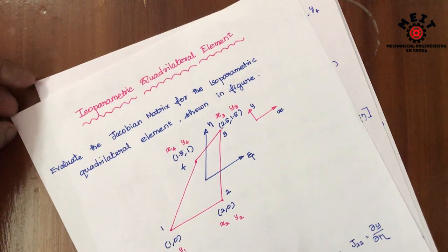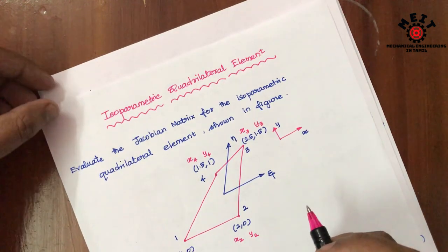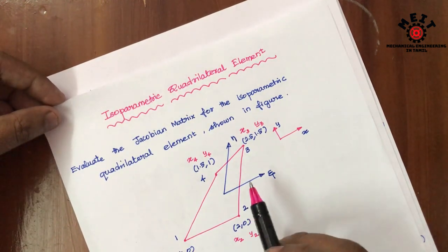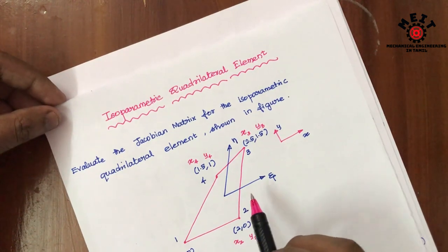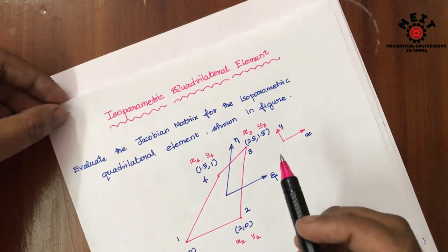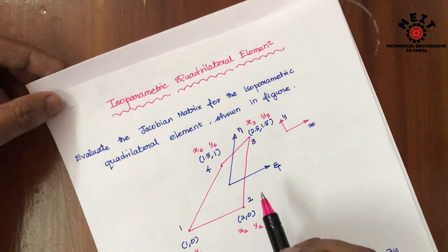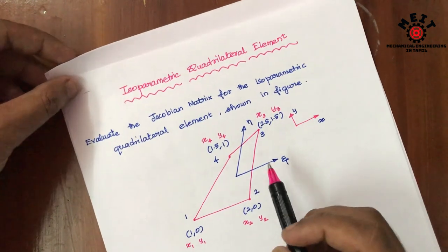Hello. In this video, we will talk about the isoparametric quadrilateral element. A quadrilateral element is just a four-node element in 2D. We will compute the Jacobian matrix. Let me go to the problem directly.